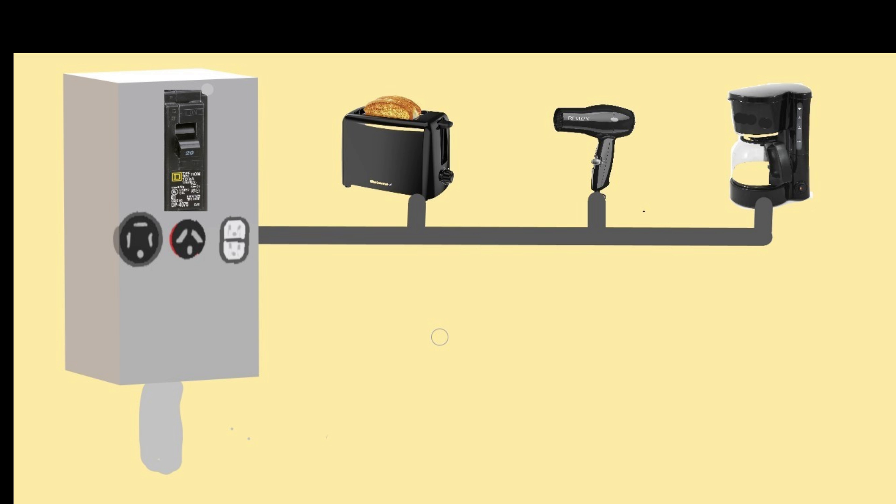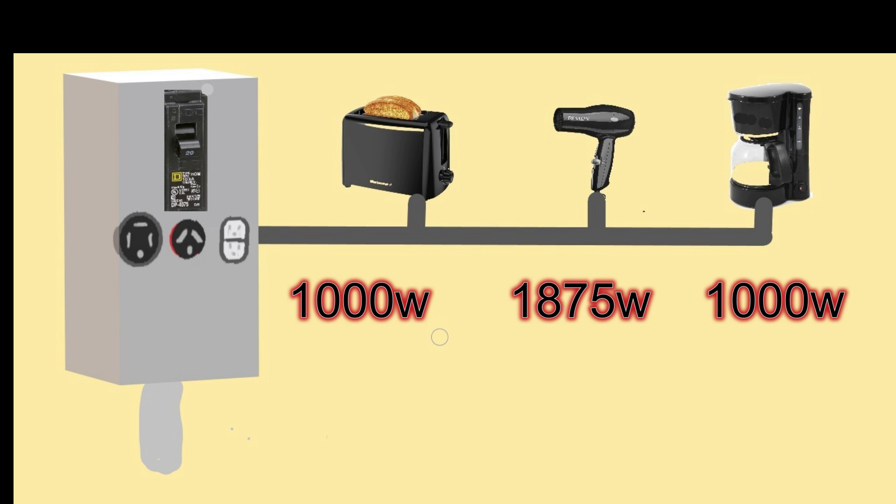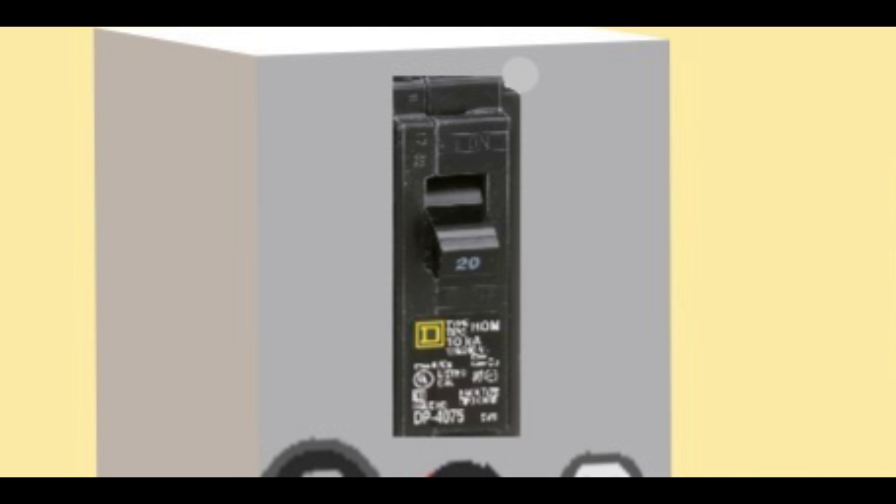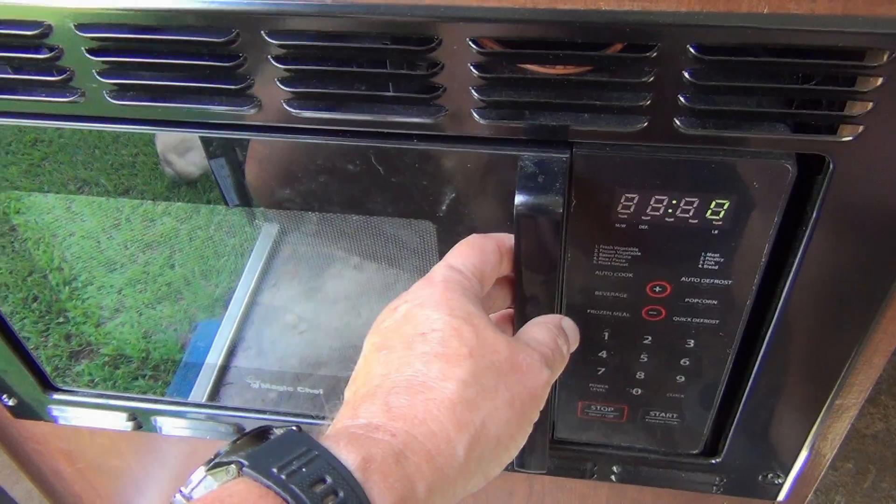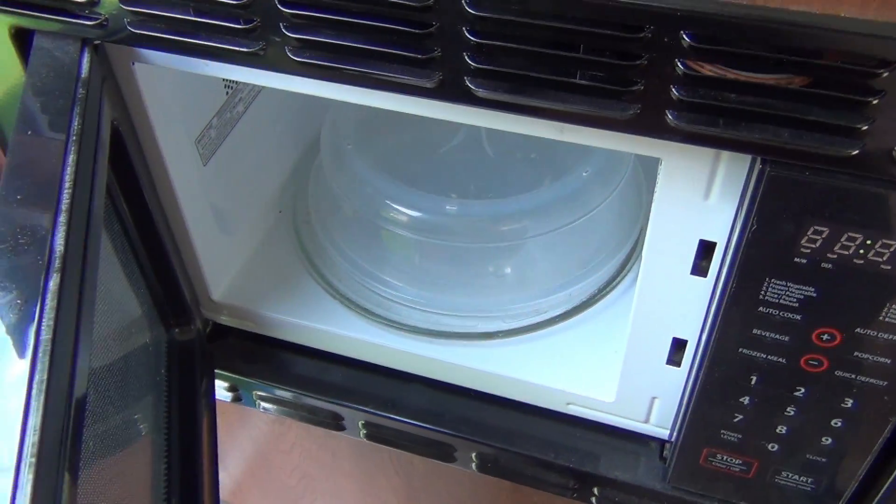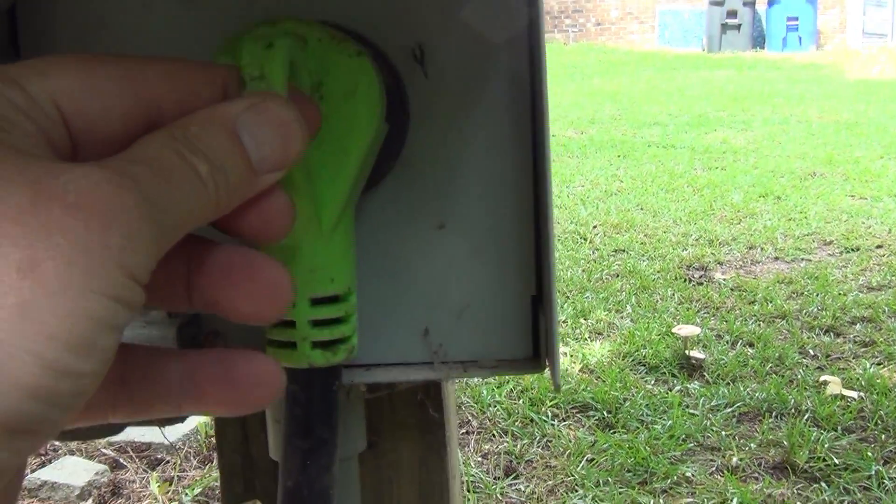If you have a 30 amp camper and you try to run a toaster, a hairdryer, and a coffee maker all at the same time, guess what will happen? You exceed the 3,600 watts that the system is capable of, and you kick out the circuit breaker. So how can you get around this? Well, you can't. 30 amps is 30 amps.